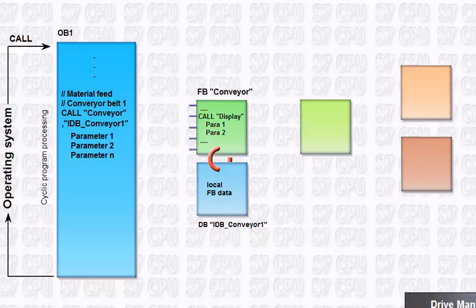A function, or FC, is used for programming frequently recurring automation functions. It can be parameterized and can return an optional return value to the calling block. Functions generally do not store any internal information beyond their run time. They only communicate via their input and output parameters.